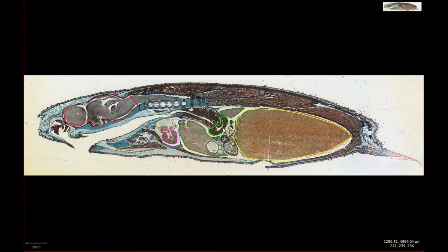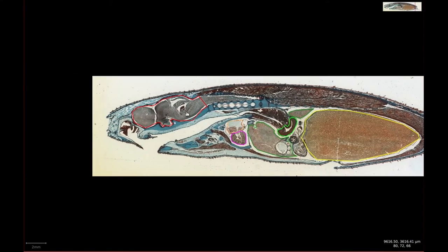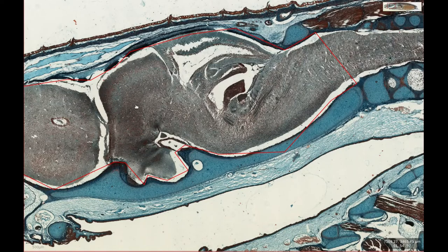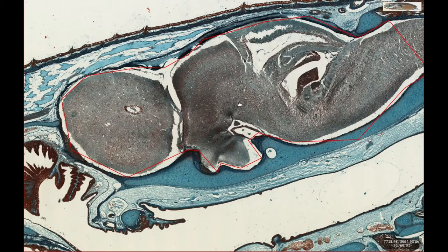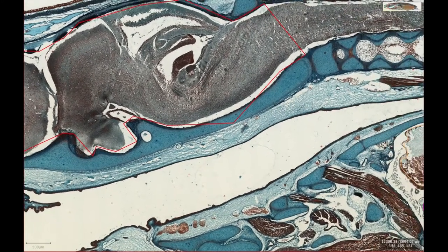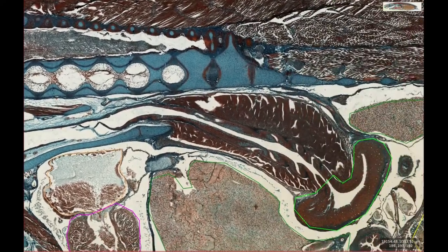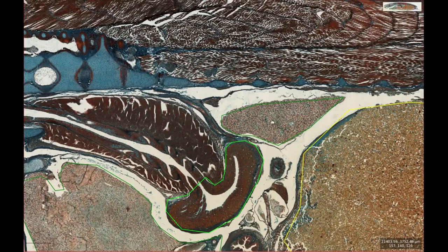The next section closest to the midline is slide 243. Looking at the head, we still have a good portion of the brain, but we don't have any eye. However, looking caudally along the back, we don't have very much spinal cord or notochord, indicating that we're just off the midline.